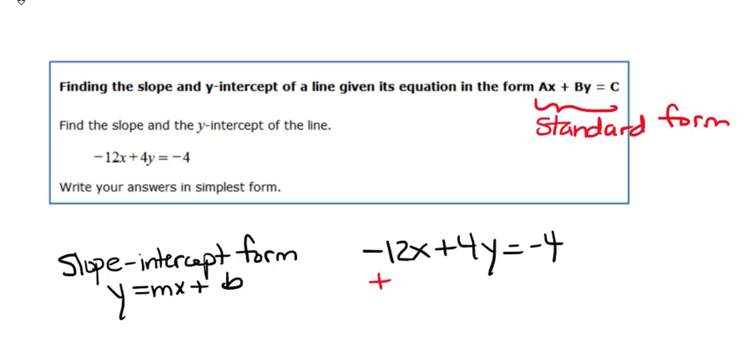For example, I can add 12x to both sides of the equation. On the left side, negative 12x plus positive 12x, these are opposites. When we add them together, we get zero. So on the left, we have zero plus 4y or just 4y.